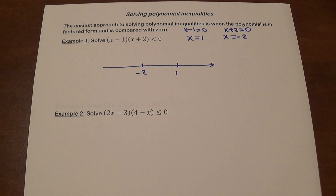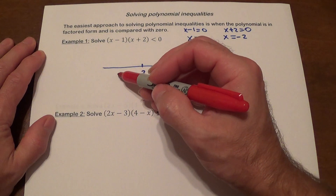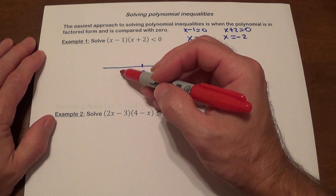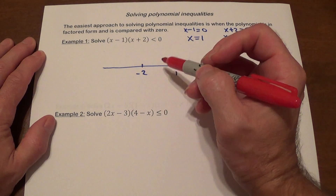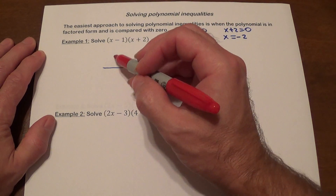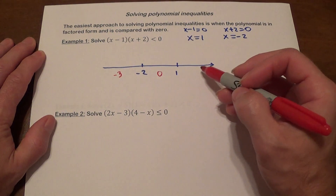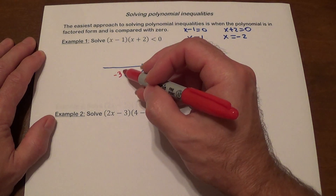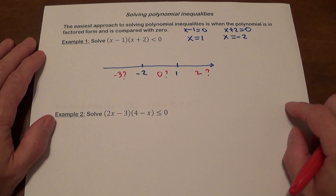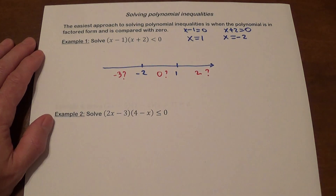Our next step is to pick a number from each interval. When you pick a number, it can be any number you want, and then you substitute that number in and check the sign — you don't actually care about the value. On the left interval I can pick negative three, on the middle interval I could use zero, and on the right interval I can use two. You cannot use the boundary points — they're not allowed.